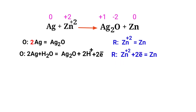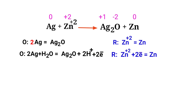Make electron gain equivalent to electron lost — the electrons lost in the oxidation half reaction must equal the electrons gained in the reduction half reaction. In the oxidation and reduction half reactions, the number of electrons are now equaled. So we can add both reactions together.